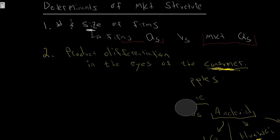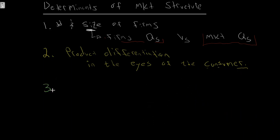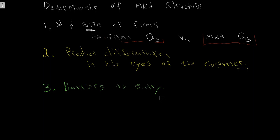Our third determinant is whether or not we have barriers to entry. What this refers to is how easy it is for a new firm to enter the market — like, 'Apple orchardists are making tons of money, that sounds like a good business to get into, I'm going to start an apple orchard,' or 'smartphone manufacturers are making killer returns, I want to get into that business.' Depending on how easy it is to get into that industry is the barrier.